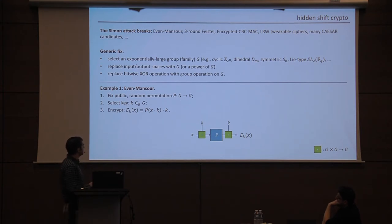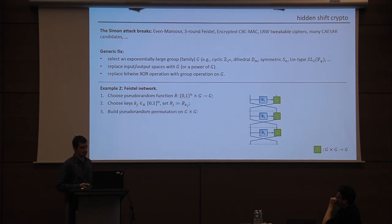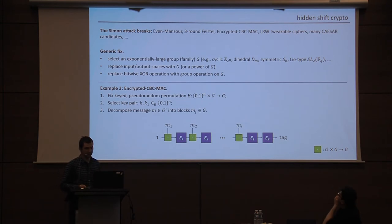So for Evan Mansour we now need a public permutation on G, and we select a uniformly random element of the group as our key, and then we do the natural thing. We compose the plaintext with the key, apply the permutation, and then compose with the key again. For Feistal networks you can do the same thing, you need some pseudorandom functions on the group, the keys themselves can just be whatever the keys are for the PRF, and then you just run the usual Feistal ladder construction, replacing bitwise XOR with the group operation, just a natural thing. And we can go on to all of these other schemes. Let's say the encrypted CBC Mac. For that you need a pseudorandom permutation on G, and you need the messages to be encoded somehow as powers in powers of the group, and then you decompose them and do the standard construction to get the tag out.